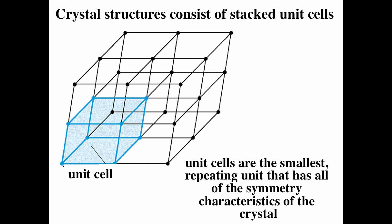Crystal structures consist of a stack of unit cells. You can think of a unit cell as analogous to a molecule. If you have a unit cell and propagate it in three dimensions along the three axes, you can actually form the crystal. Unit cells are the smallest repeating unit that has all the symmetry characteristics of the crystal — basically, from the unit cell you can recreate the crystal.